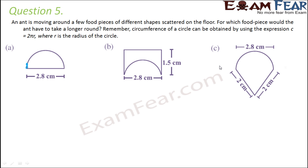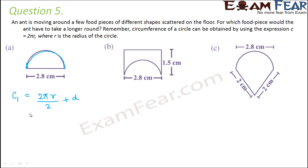Let us start with the first figure. Here we have a semicircle — that is, a half circle — plus the diameter. To find the circumference C1: the total circumference of a full circle is 2πr, but since we only have half a circle, we divide by 2. Then we add the diameter. So: C1 = (2πr)/2 + diameter = πr + 2r.